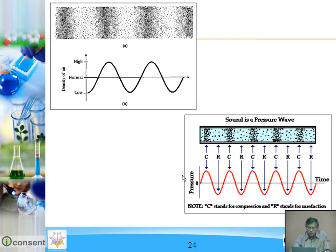And in between that, there are rarefactions. Now this is the graph of this. See, where there is compression, there is a crest. And where there is rarefaction, there is a trough.